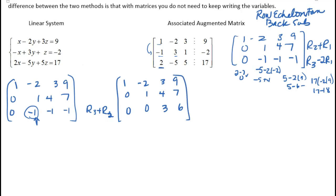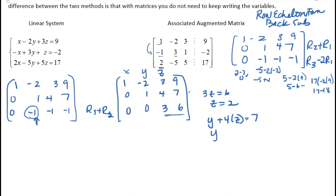I've got it in row echelon form and can use it to solve. Remember: column 1 is x, column 2 is y, column 3 is z. From the bottom row: 3z equals 6, so z equals 2. Then I take that value and put it in the middle equation: y plus 4z equals 7, so y plus 4 times 2 equals 7, giving y plus 8 equals 7, so y equals negative 1.